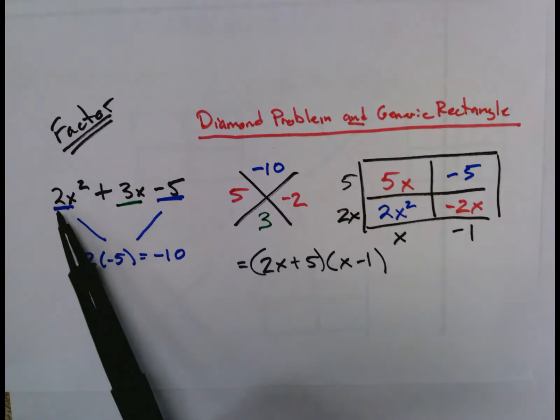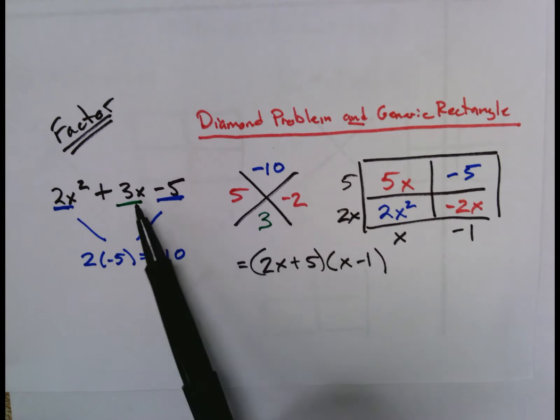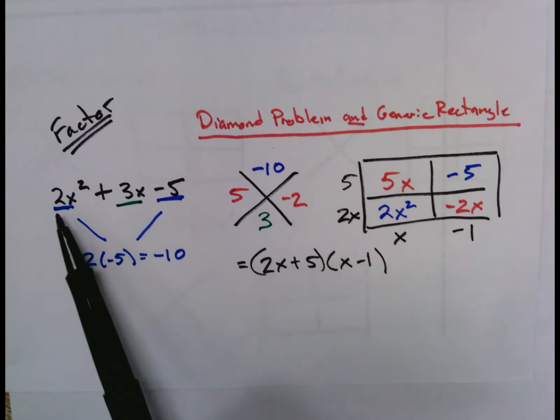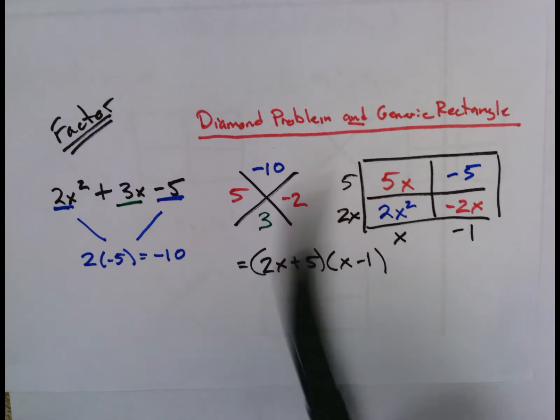So an example of that would be if you had the expression 2x² + 3x - 5. Our leading coefficient is 2 here, so it does change the way we have to go through our factoring process.